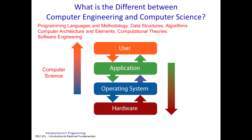On the computer science side, things they deal with include programming languages, data structures, how to organize your code and data, algorithms — what is the best way to compute something — computer architecture, how to organize computer systems, computational theories, and software engineering. These are the high-level targets that computer science is looking at.